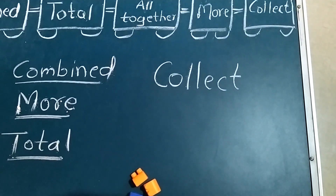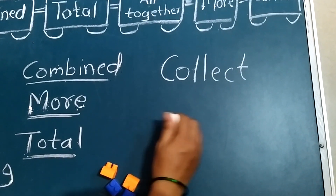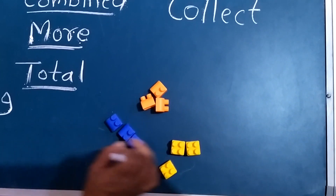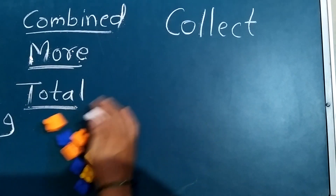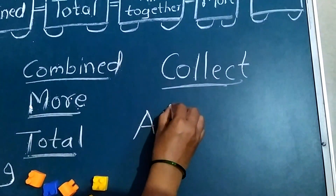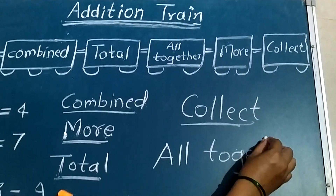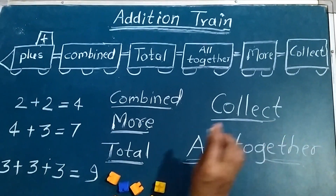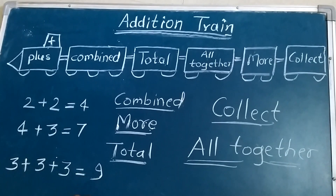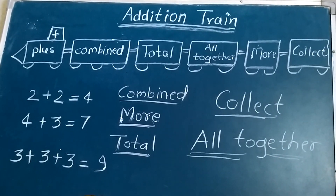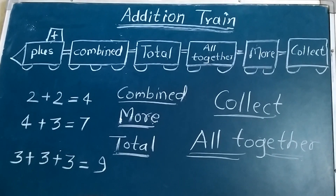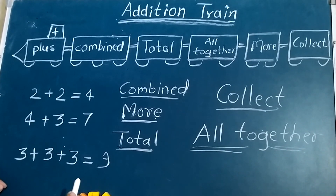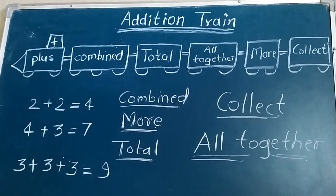Counting again: 2, 3, 4, 5, 6, 7, 8, 9. And once more: 3, 4, 5, 6, 7, 9.